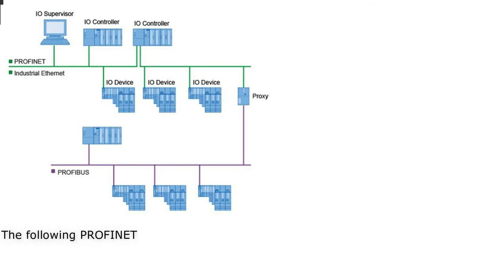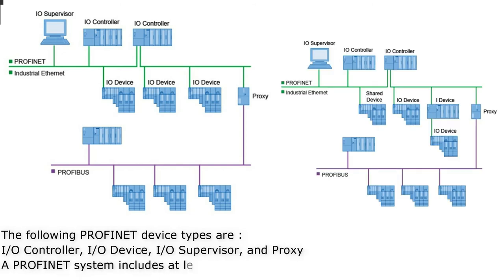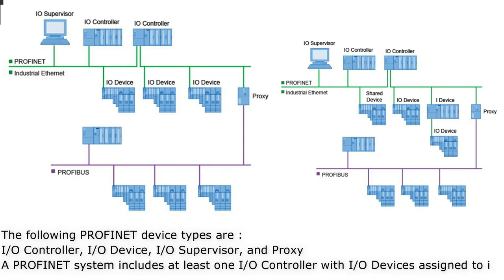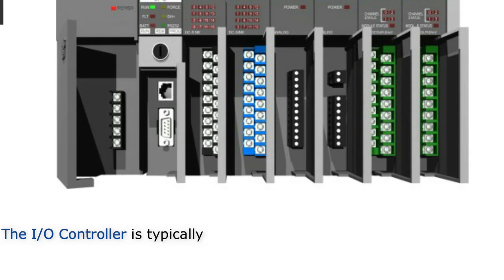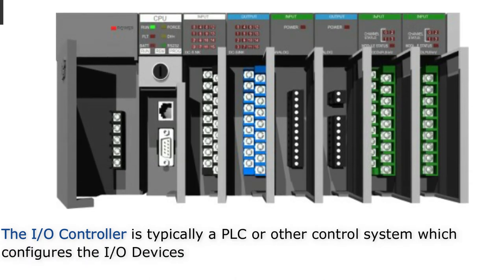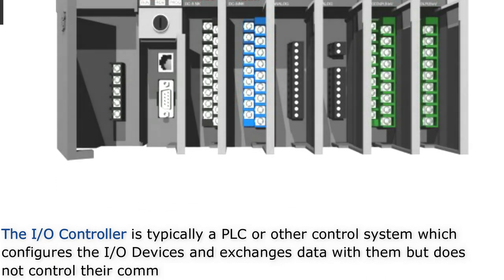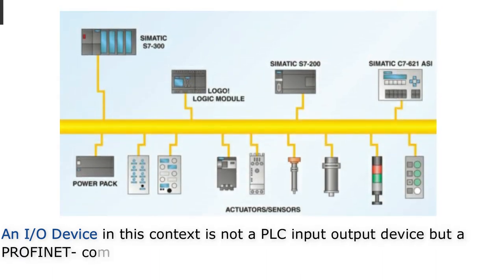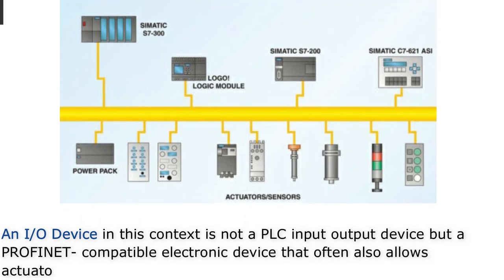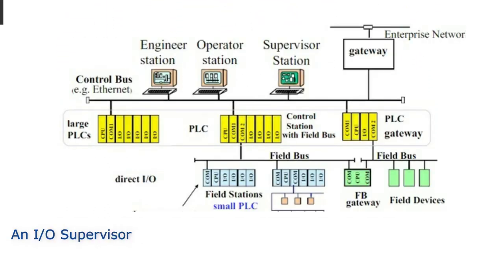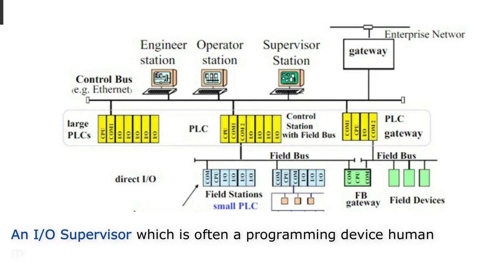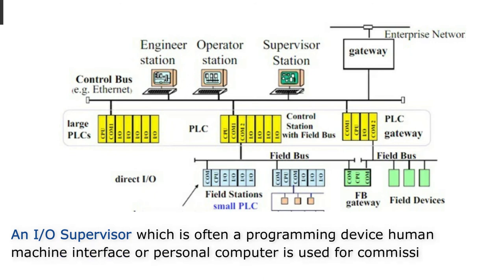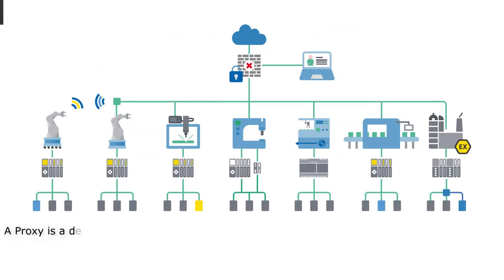The Profinet device types are: I-O controller, I-O device, I-O supervisor, and proxy. A Profinet system includes at least one I-O controller with I-O devices assigned to it. The I-O controller is typically a PLC or other control system that configures the I-O devices and exchanges data with them. An I-O device is a Profinet-compatible electronic device that often also allows actuators and sensors to be connected. An I-O supervisor, often a programming device, HMI, or PC, is used for commissioning, monitoring, and diagnostics. A proxy is a device that connects a Profinet network to a fieldbus such as Profibus.